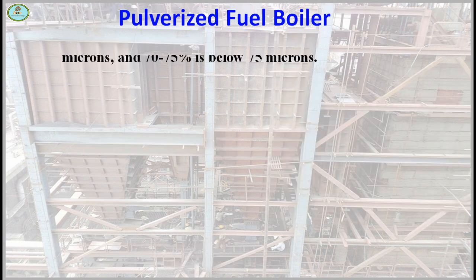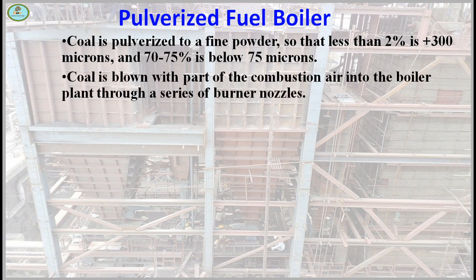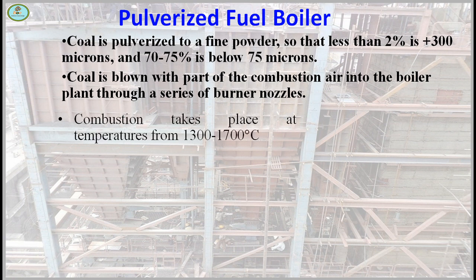Pulverized fuel boilers: coal is pulverized to a fine powder so that less than 2% is plus 300 microns and 70 to 75% is below 75 microns. Coal is blown with part of the combustion air into the boiler plant through a series of burner nozzles. Combustion takes place at temperatures from 1300 to 1700 degrees Celsius — very high temperature.